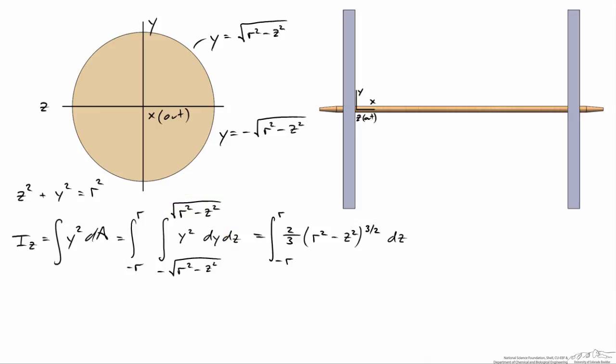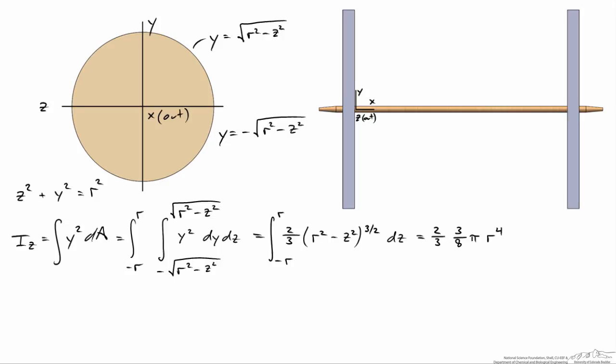We integrate this from z = -r to +r. This simplifies to (2/3)(3π/8)r⁴, which equals (π/4)r⁴, the formula found in reference books.